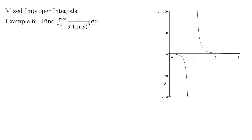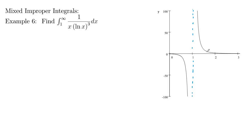If you look at the graph of 1 over x ln(x) cubed, it looks like this. You have a vertical asymptote at x = 1, and we're integrating from 1 out to infinity. So you've got an infinite horizontal strip but also an infinite vertical strip. What we want to do is break this integral up into two pieces so we've only got one issue in each piece.